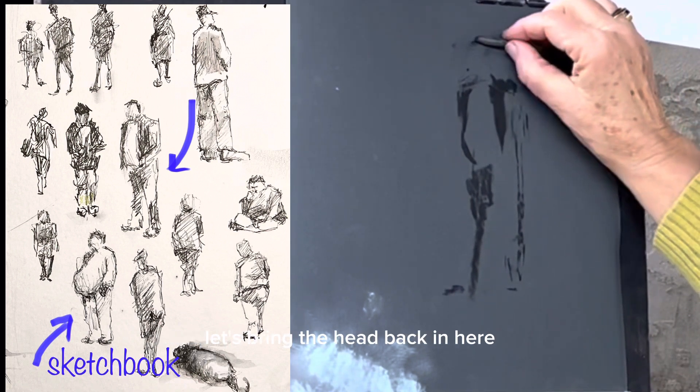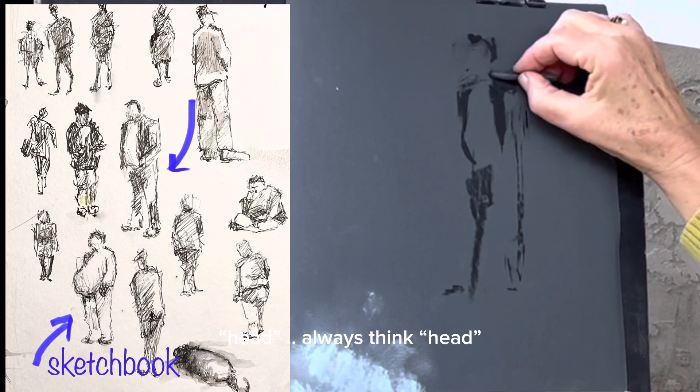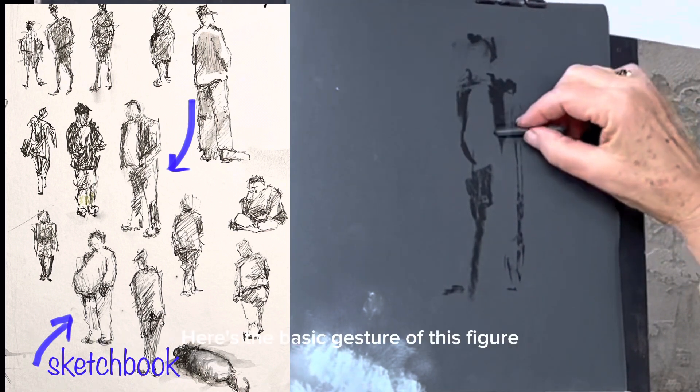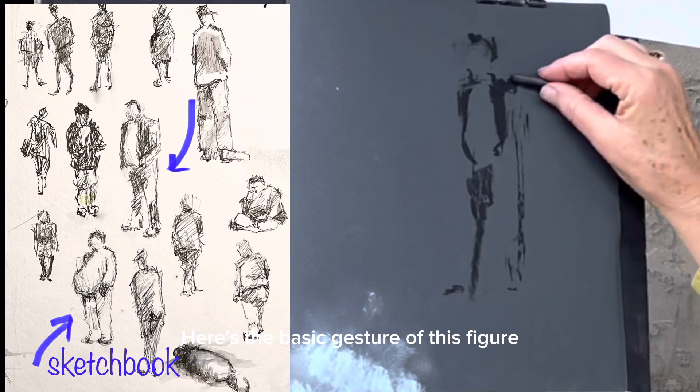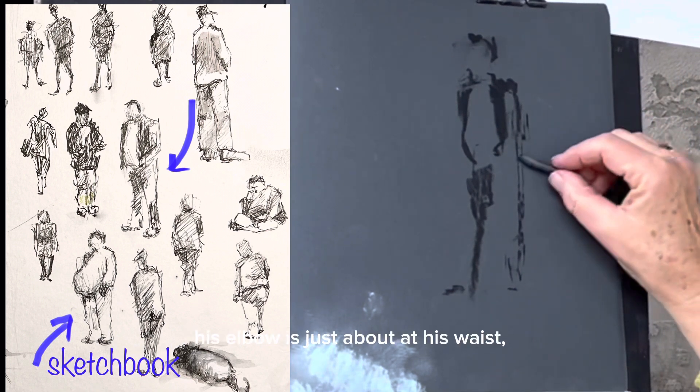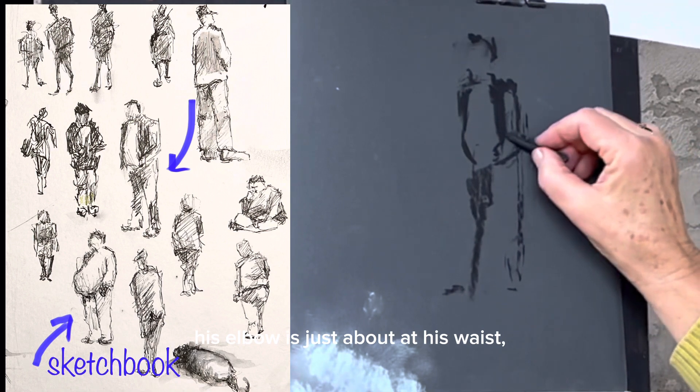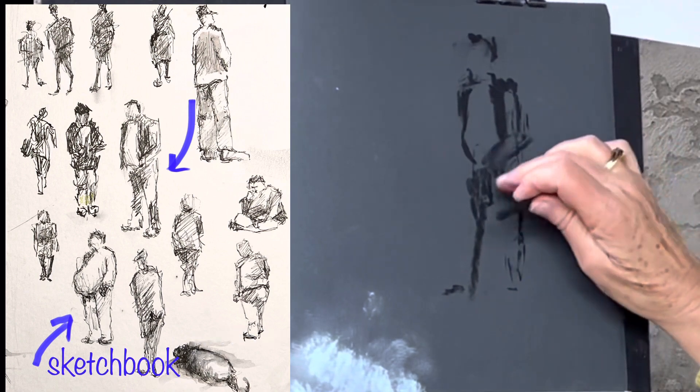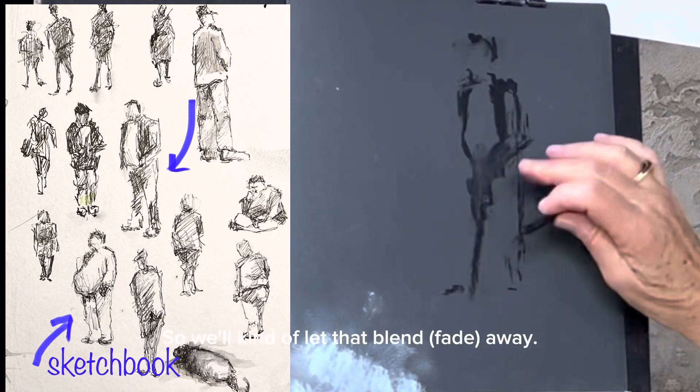That has gone too far out. Let's bring the head back in here. Always think head and you always have to have a little neck on that head. So here's the basic gesture of this figure. The arm will come down, his elbow is just about at his waist, and his hand is stuck in the pocket. So we'll kind of let that blend away.